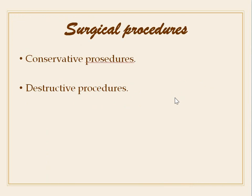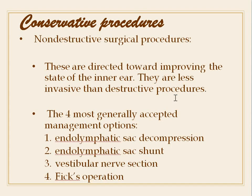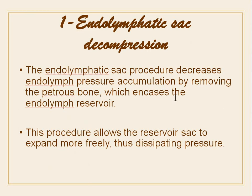Surgical procedures are divided into conservative and destructive. Conservative non-destructive procedures improve the state of the inner ear and are less invasive. The four main options are endolymphatic sac decompression, endolymphatic sac shunt, vestibular nerve section, and the Fick operation. In endolymphatic sac decompression, the petrous bone encasing the endolymph reservoir is removed, allowing the sac to expand and dissipate pressure.